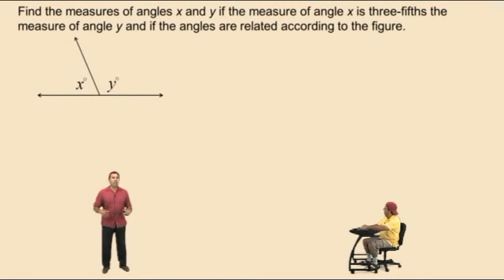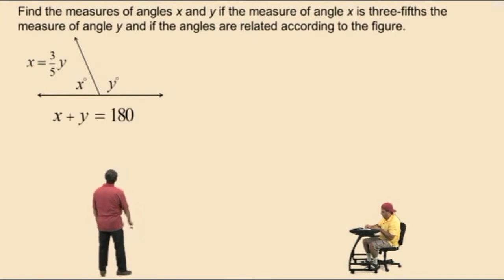Well, notice we are given x is 3 fifths y. Therefore, we get the equation x equals 3 fifths y. And the figure shows that angles x and y are supplementary angles. Therefore, their sum has to be 180.